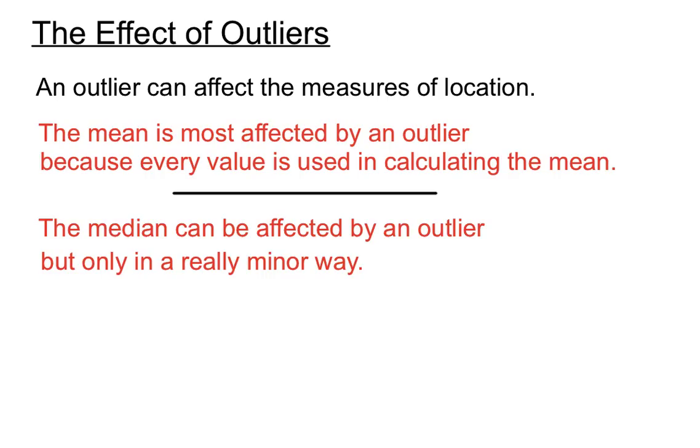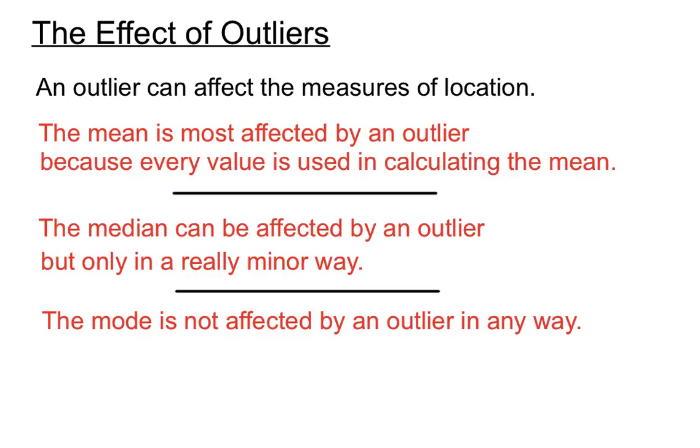The median can be affected by an outlier but only in a really minor way. The addition of a really big score or really small score to a set of data just bumps the median across one a little bit, but it doesn't really have much of an effect on it. The mode is not affected by an outlier in any way. One really small or really large score is unlikely to be the mode of a set of scores.